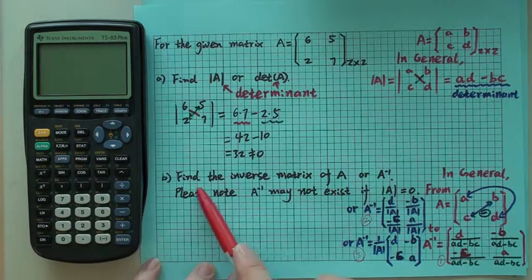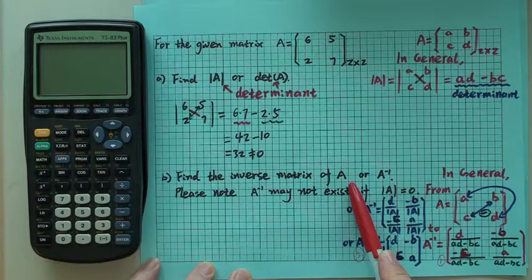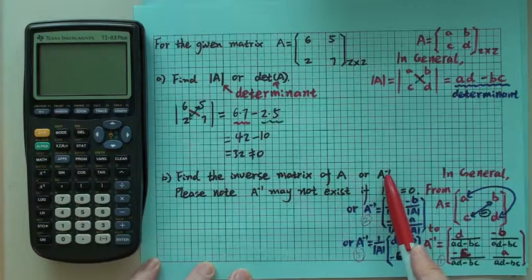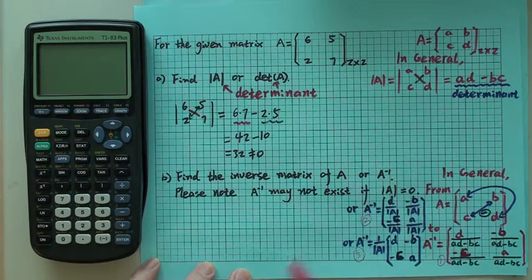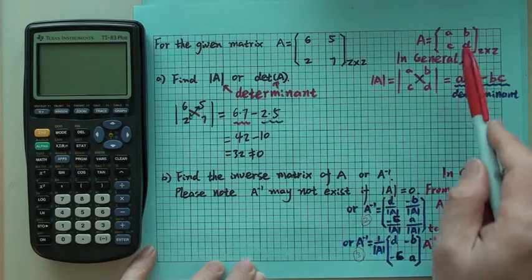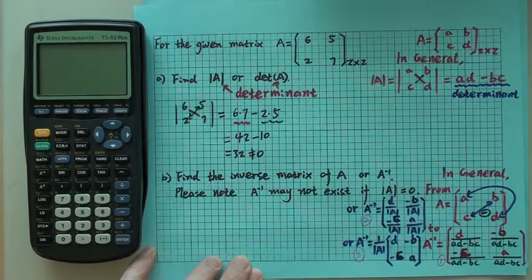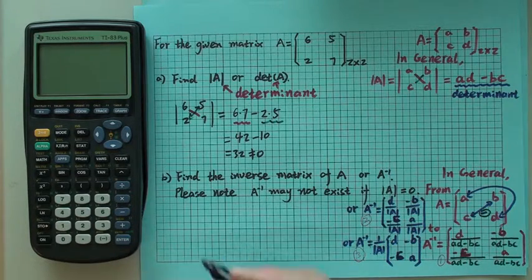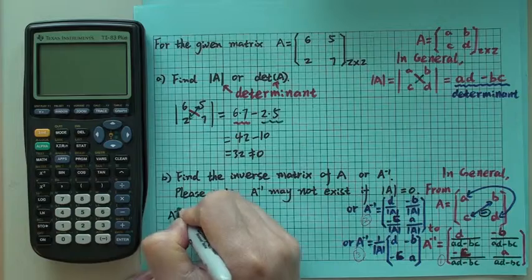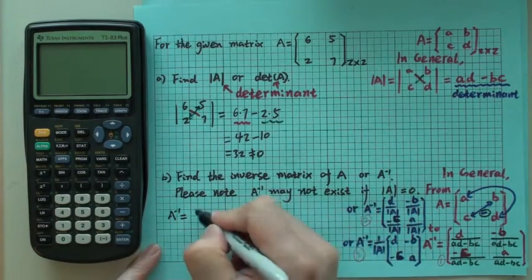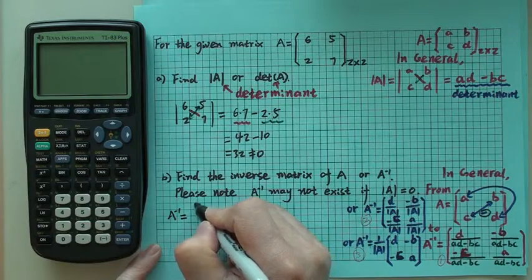Now we want to find the inverse matrix of A, or we may write A to the negative 1. How are we going to do that with a 2 by 2 matrix? It is quite easy to do. You see, A inverse, what you first do is